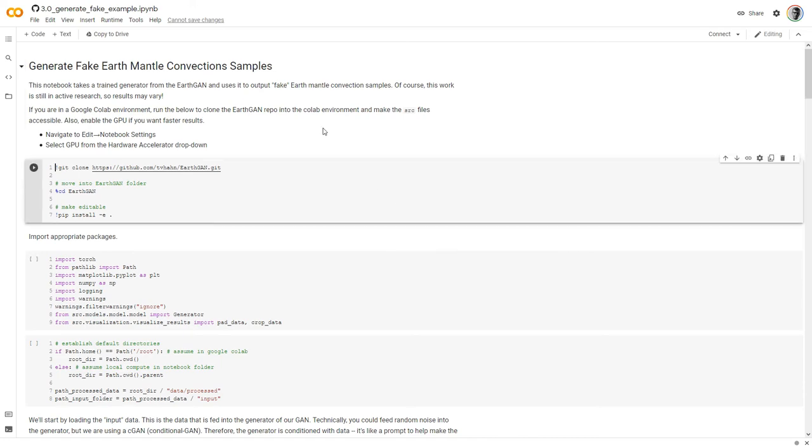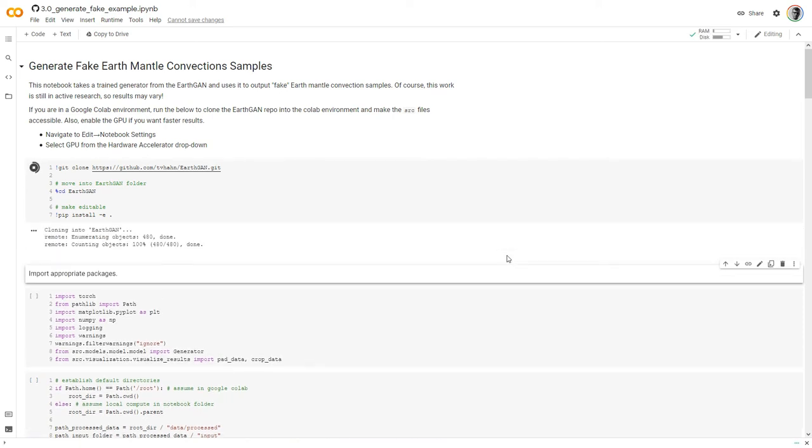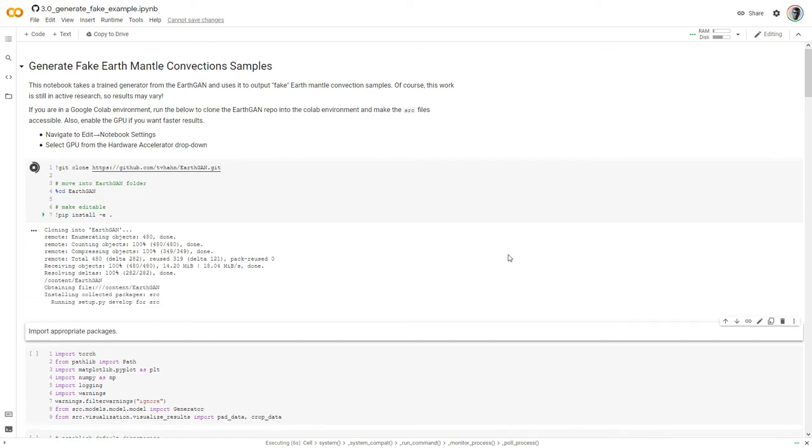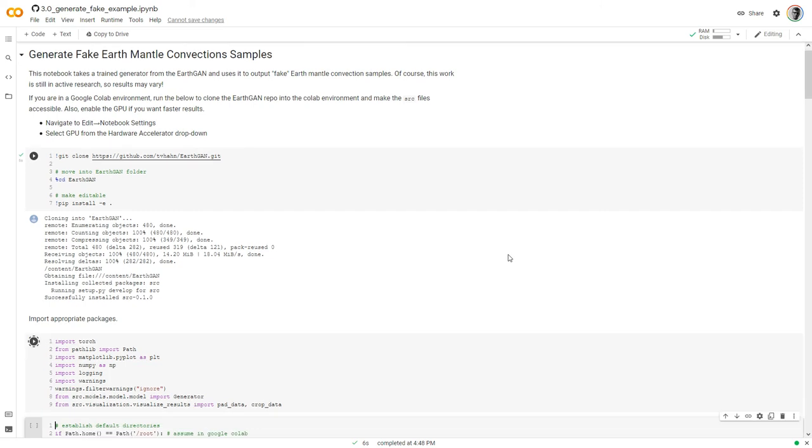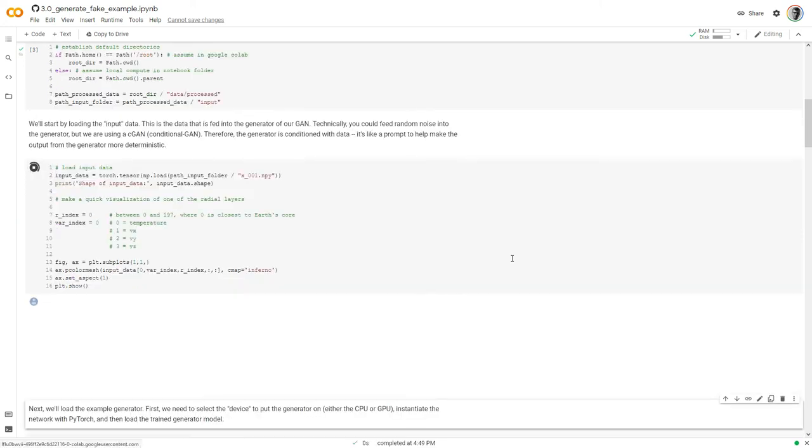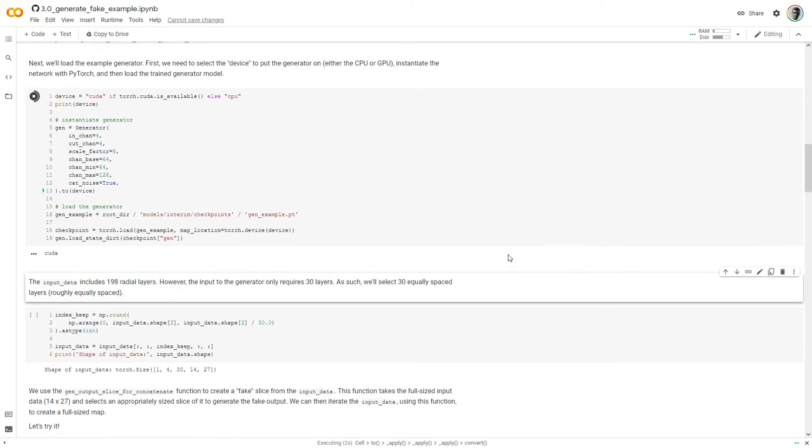First, we need to clone the GitHub repo. You can press the play button or the shift enter button to execute the cell and move to the next one. There we are just cloning the repo into the Colab environment. We need to load the appropriate packages, including PyTorch. That's done. And set the proper directories. That's the downscaled data. Now we'll load the trained generator model. That's trained on about 46 epochs.